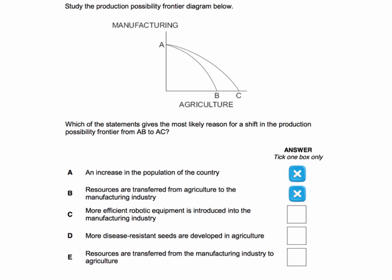Answer C: more efficient robotic equipment introduced into manufacturing — that would increase the production capability and capacity of manufacturing and shift the PPF up the y-axis, but there's been no change at the top of the PPF in terms of A being the maximum output, so C is wrong as well.